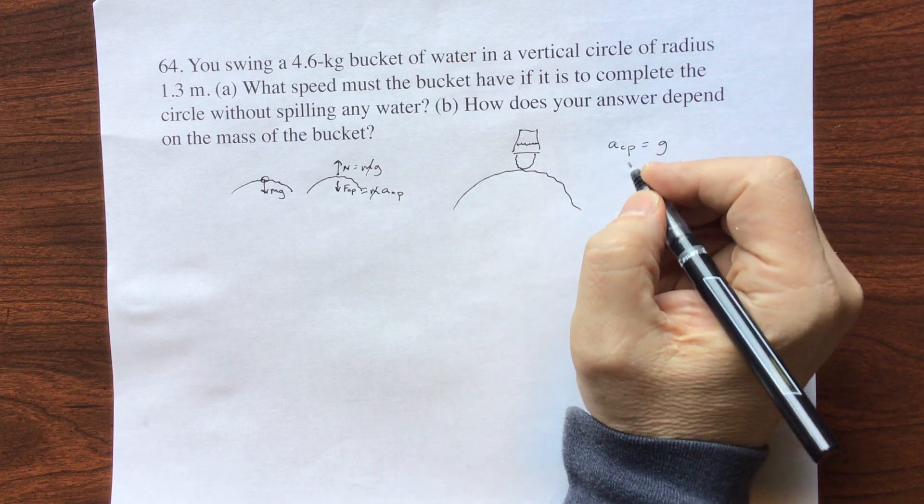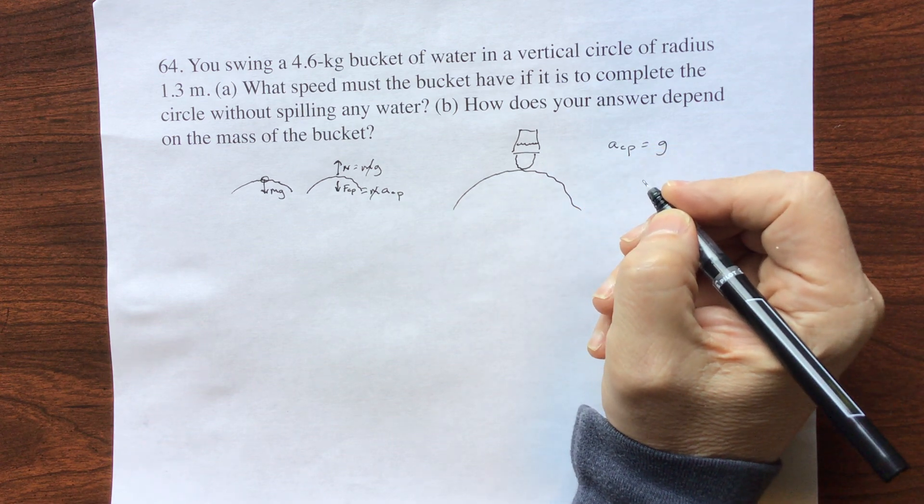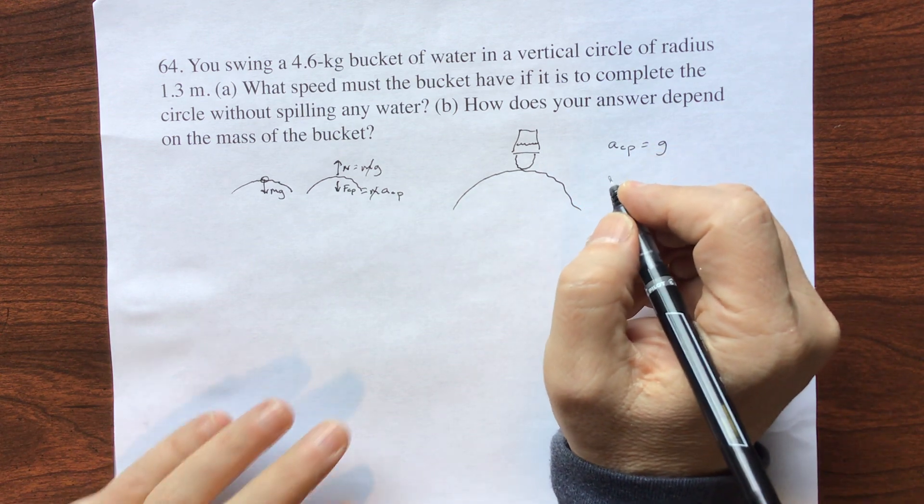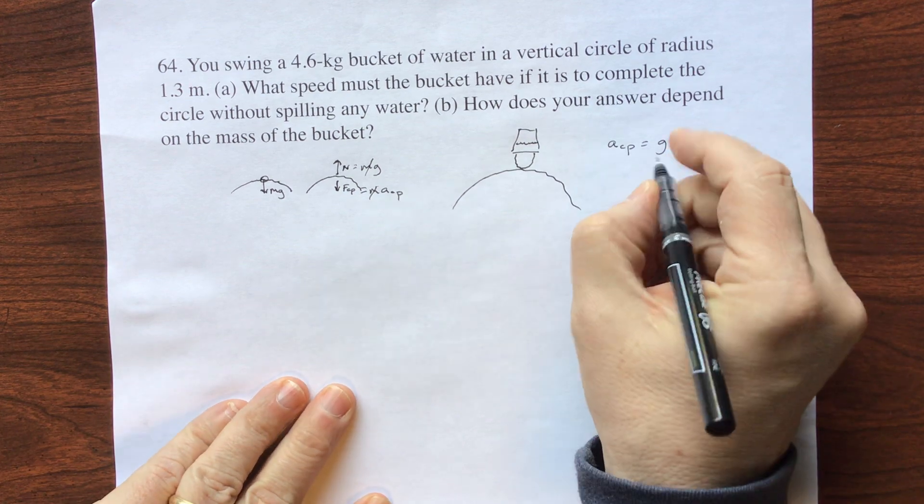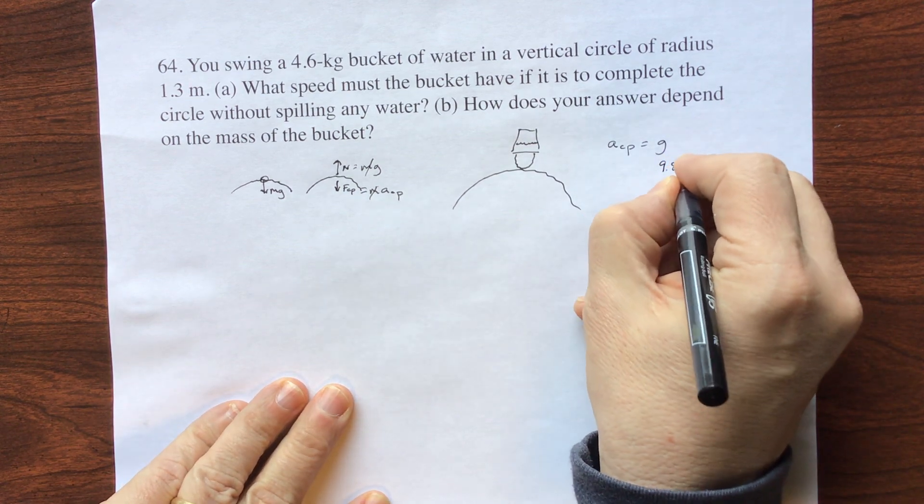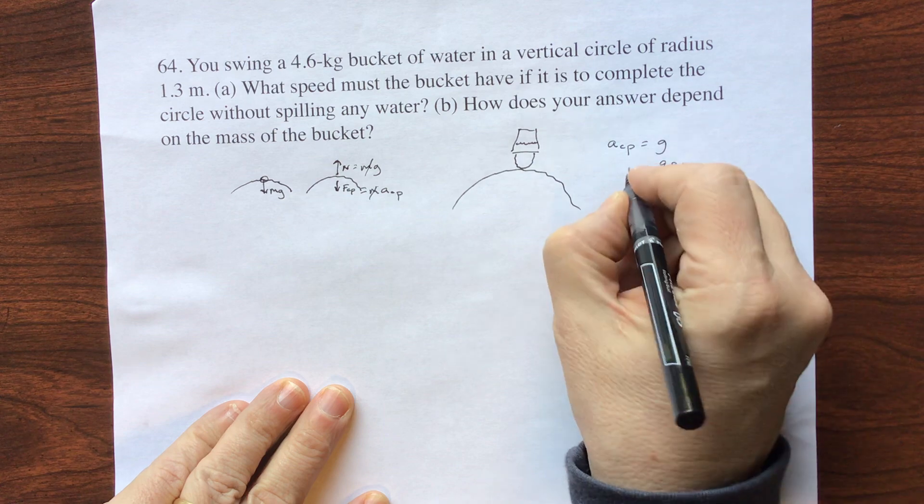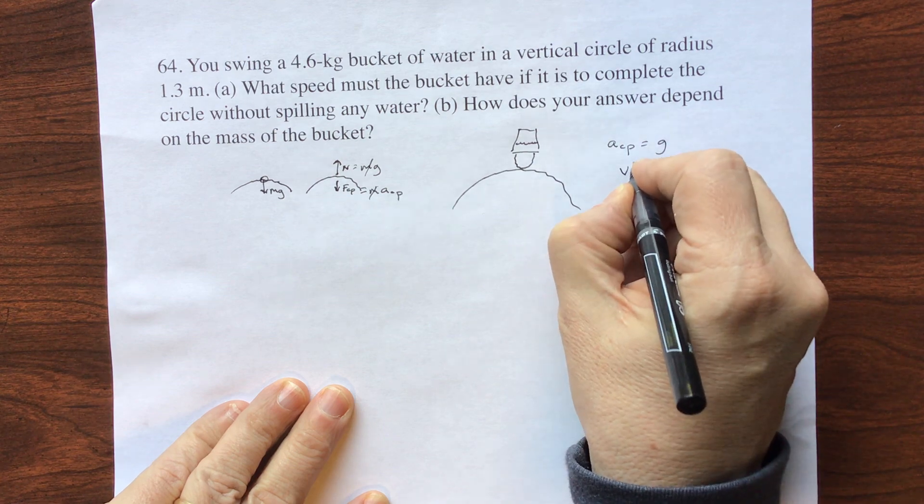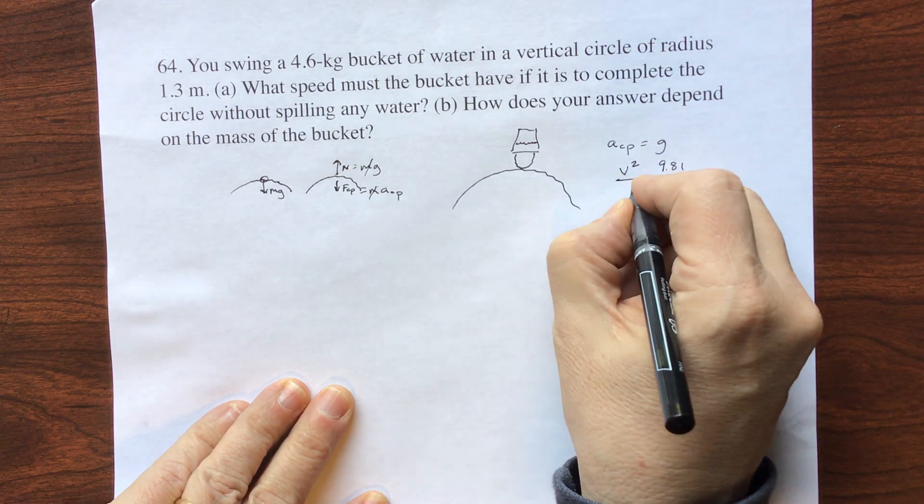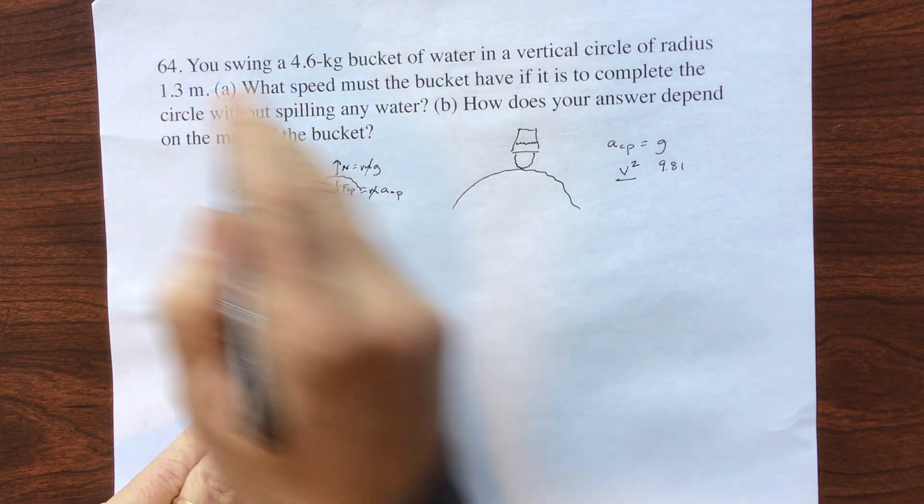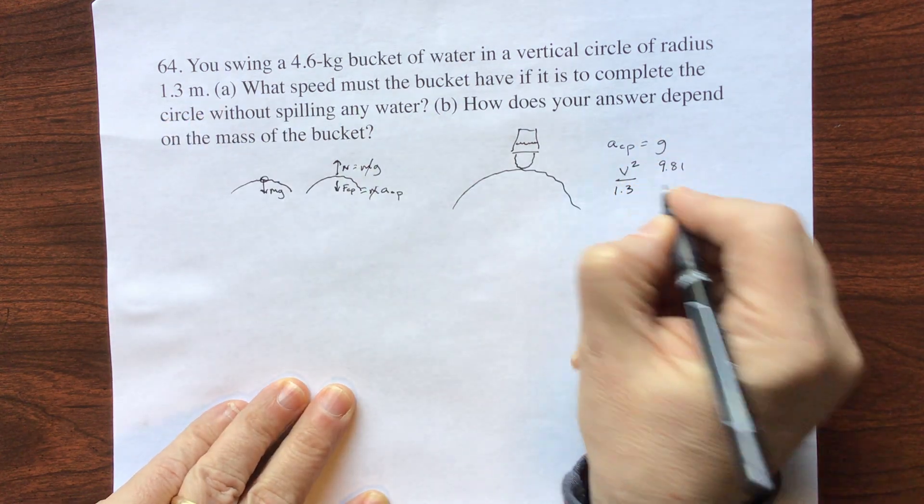So if it's equal to gravity, then this is equal to 9.81 and your centripetal acceleration is equal to the square of the velocity over the radius. And they give us a radius of 1.3 meters.